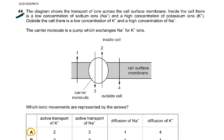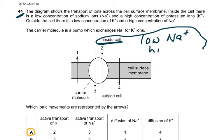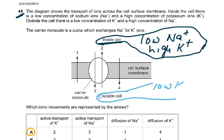Now, looking at question number 44, the diagram shows the transports of ions across the cell membrane. Inside the cell, there is low sodium. So, inside the cell, we have low sodium and high potassium. This is inside the cell. Now, outside the cell, what do we have? Outside the cell, there is low potassium and high sodium. So, you do this, you write this. So, outside the cell, there is a low concentration of potassium. So, low potassium and high sodium. Then, look at these headings. Active transport of potassium, active transport of sodium.